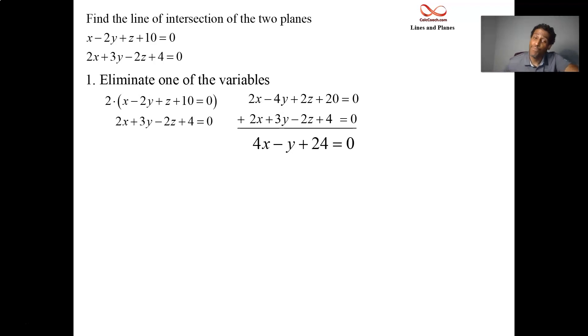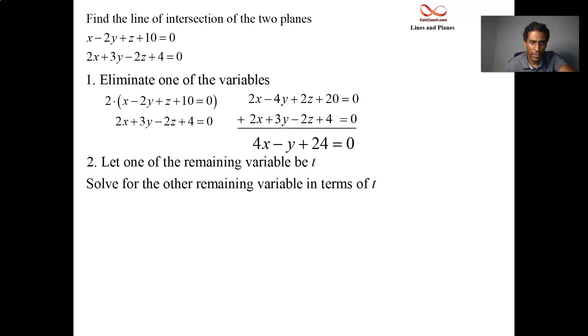It's supposed to be equal to 0. All right, now pick one of these two variables. Doesn't matter which one. Pick one of them to be the variable t. And then you'll solve for the other in terms of t now.